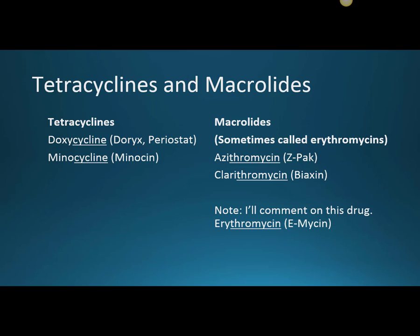Minocycline's brand name is Minocin. Both are tetracyclines with the 'cycline' stem. The macrolides — sometimes called erythromycins after the original drug — include azithromycin, which comes as a Z-Pak or Zithromax, and clarithromycin, which is Biaxin. The 'bi' in Biaxin comes from BID dosing, meaning twice daily.